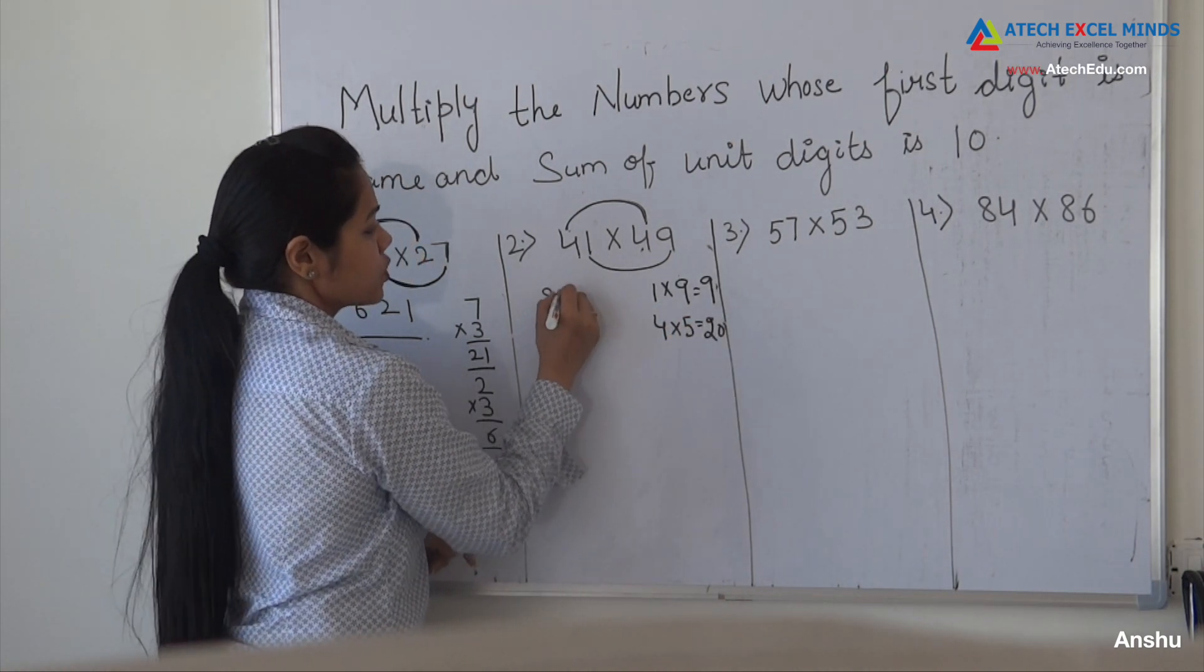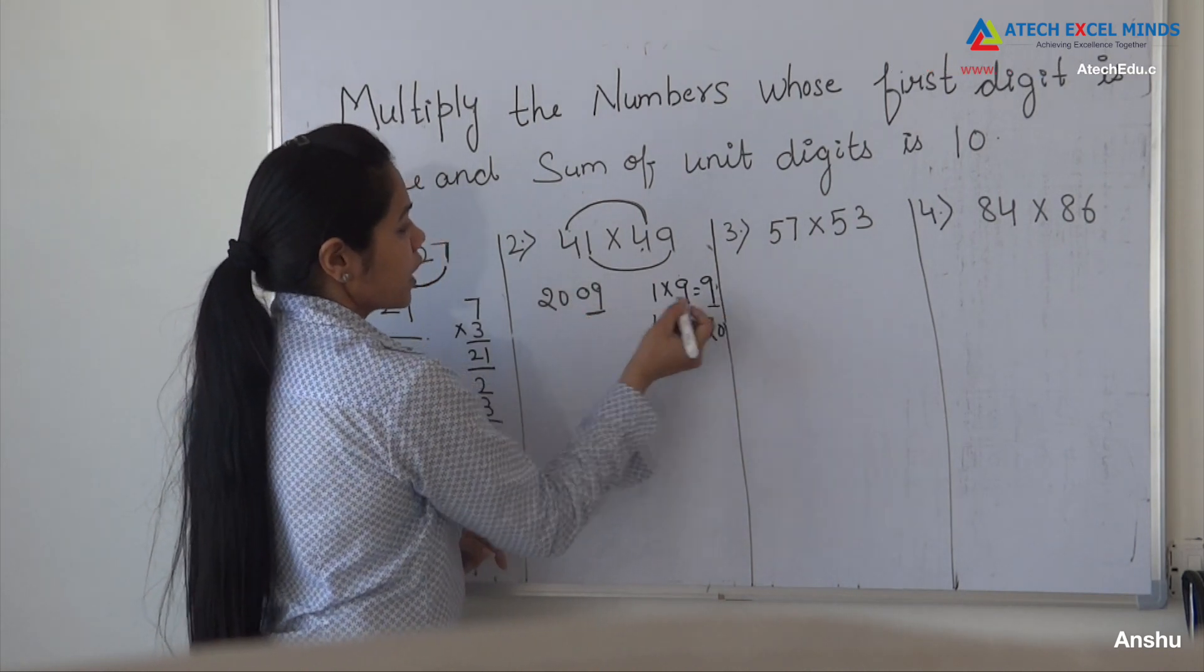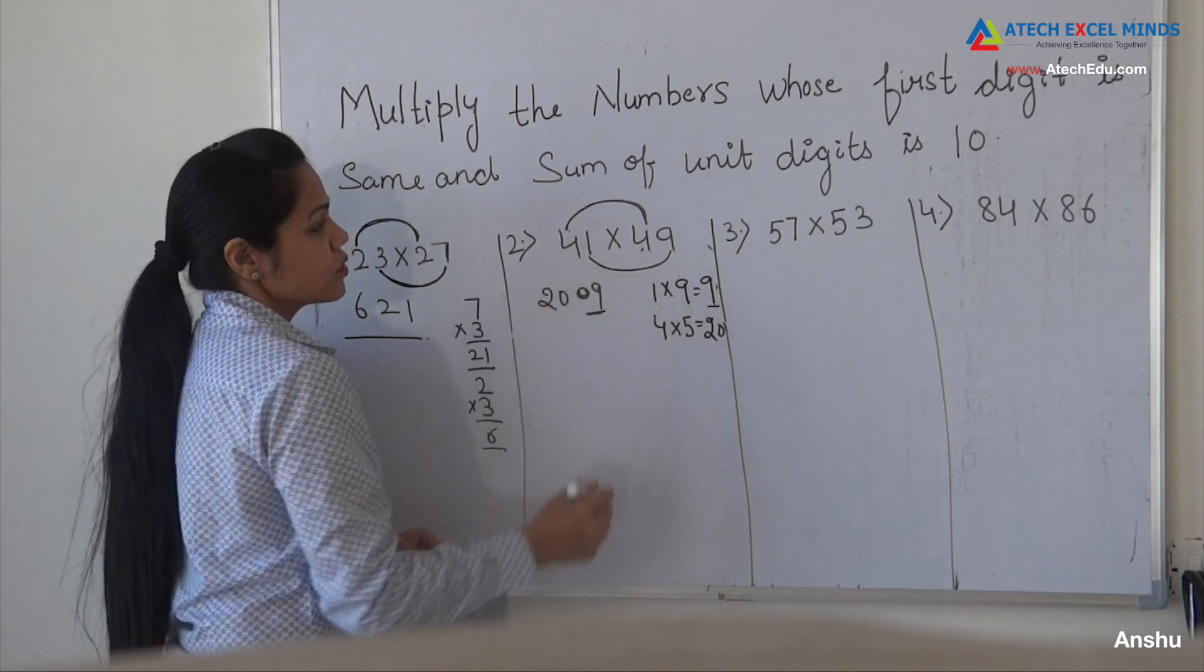So write here 2, 0, 0, 9. You have to cover two spaces here. So if it is 9, you have to cover it with 0.